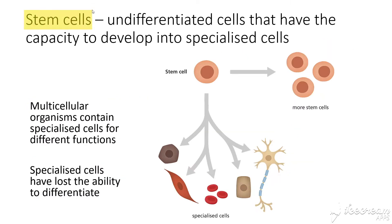Firstly, the definition of stem cells. Stem cells are undifferentiated cells that have the capacity to develop into specialised cells. 'Undifferentiated' means that they have not become different cells — they are the base cell, the cell that all other cells are created from. They therefore have the capacity to develop into what we call specialised cells.